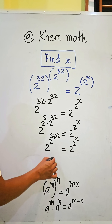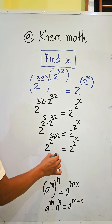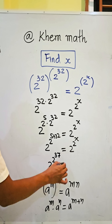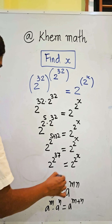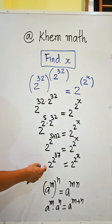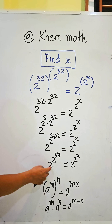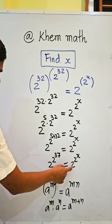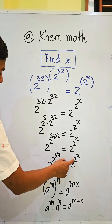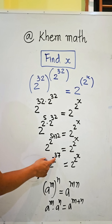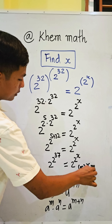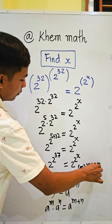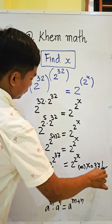So we get 2 power (2^5 plus 32), equal to 2 power 2 power 8. This gives us 2 power 2 power 37, equal to 2 power 2 power 8. Since the bases and outer exponents match, comparing gives us 8 equal to 37 as our answer.